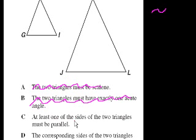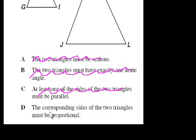Some of these statements are so crazy that they're hard to process. At least one of the sides of the two triangles must be parallel. Well, I don't care how they're oriented. You don't care about the orientation of the triangles. The corresponding sides of the two triangles must be proportional. Yeah, that's one of the ways that you know that something is similar, that the corresponding sides are proportional. So that is D. This is almost, you know, do you know the definition of a similar triangle?